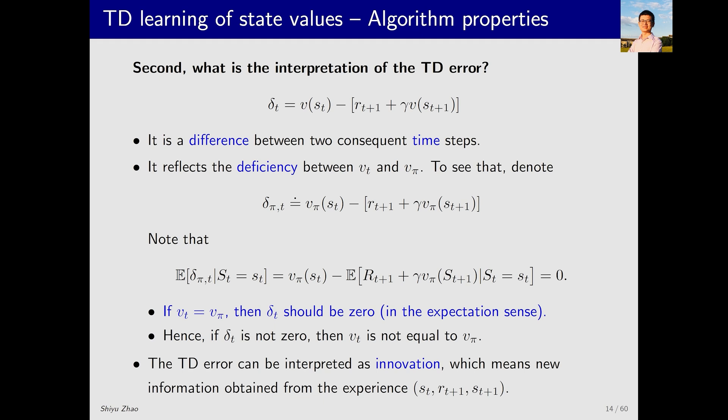Finally, TD error can also be interpreted as innovation. What is innovation? It is new information. Suppose I have an estimate of V_pi and this estimate might be inaccurate. Then I get a new experience. I link this experience with my estimate and calculate the error. I find out that there is an error. The existence of this error indicates that my current estimate is inaccurate. I can use this error to improve my current estimate. This is new and useful information.